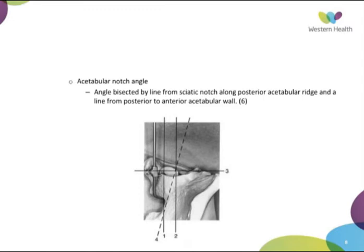The potentially most confusing method is the acetabular notch angle by Maruyama. It uses the angle bisected by a line from the sciatic notch along the posterior acetabular ridge, and a line from the anterior to the posterior acetabular wall. A parallel line is moved posteriorly; if this line is not perpendicular to the initial line, you will have increased anteversion.